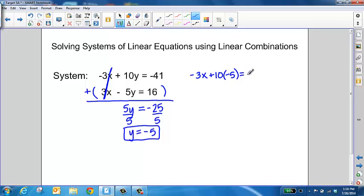So we're going to substitute in negative 5 for the y value, and then we're just going to start working this out. So to start solving for x here, we're going to add 50 to both sides. That's going to give us negative 3x equals a positive 9. So then if we divide both sides by negative 3, we get x equals negative 3.